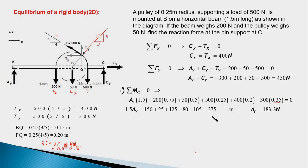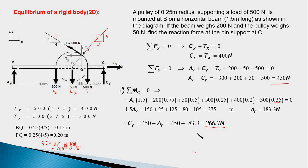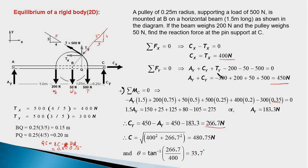Solving this equation gives Ay equal to 183.3 newtons. Plugging this into the force equation gives Cy. We now have Cy and Cx equal to 400 newtons, so we compute the resultant C as the square root of Cx squared plus Cy squared. This works out to 480.75 newtons, making an angle theta with the x-axis equal to 33.7 degrees. So the actual reaction force at C is 480.75 newtons at 33.7 degrees.